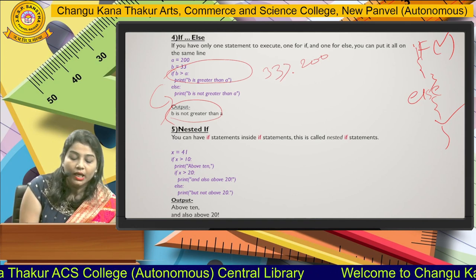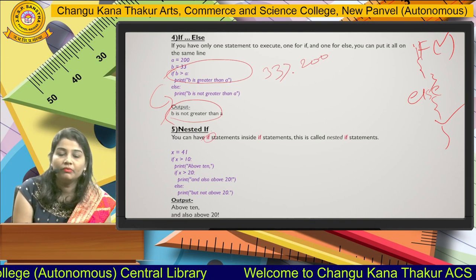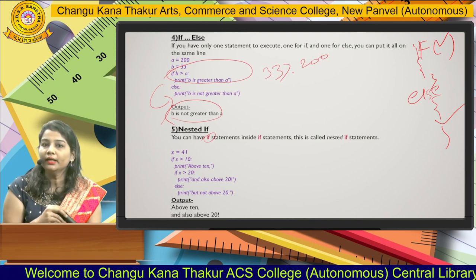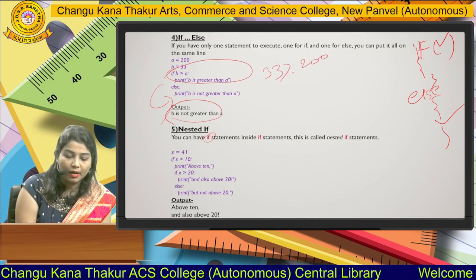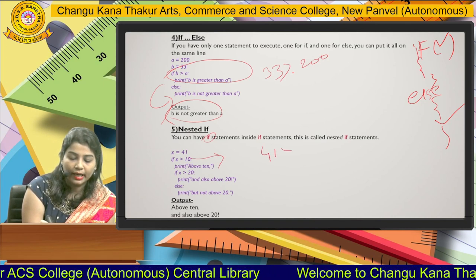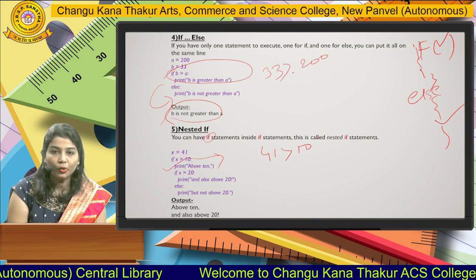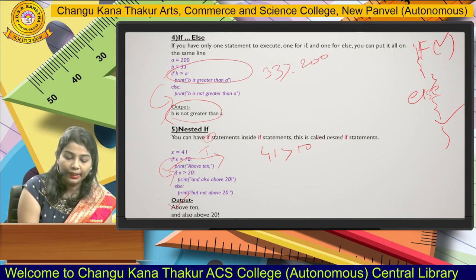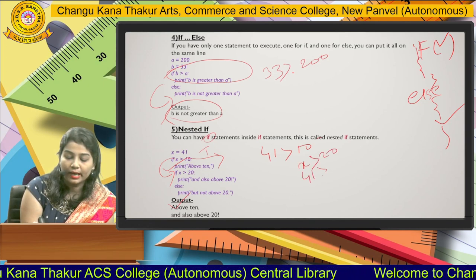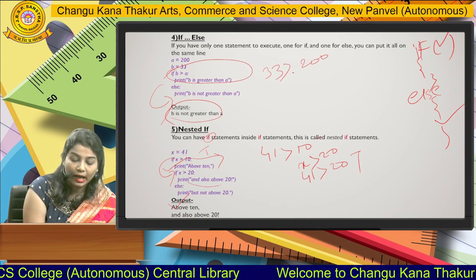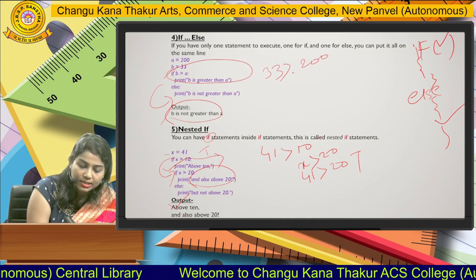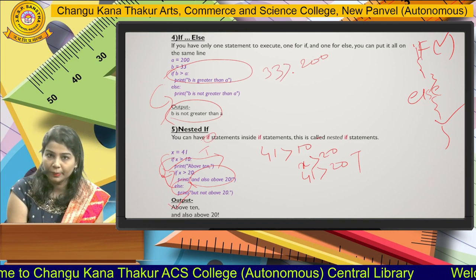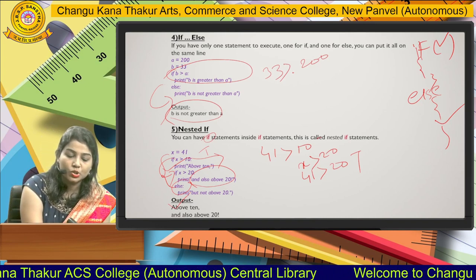Now we move to nested if. In nested if, x equals 41. Nested if means you nest one if inside another if. If the first if block is true, then the second if block gets executed; otherwise the else block executes. In our example, 41 is greater than 10, so the condition is true and it prints 'above 10'. Then inside the if block, 41 is greater than 20, which is also true, so it prints 'x is greater than 20'. Nested if is used when there are multiple conditions to check.